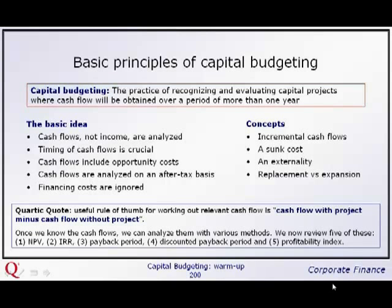A sunk cost is a cost that has already been paid or committed — if we're using a machine already sitting there or already committed to buying, doing the project makes no difference, so it doesn't cause any incremental cash flow. An externality is some outside impact — by doing one project, another project may lose value, which would be a cost. For replacement versus expansion: in replacement analysis, incremental cash flows are cash flows with the new project versus the previous project; for expansion, cash flows without the project are presumed zero.